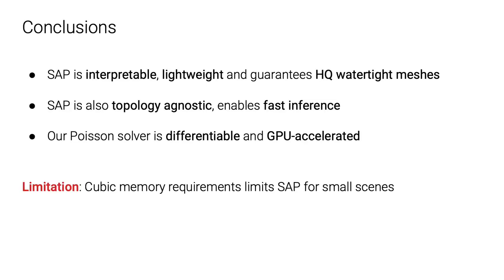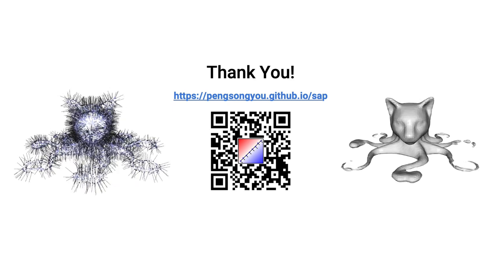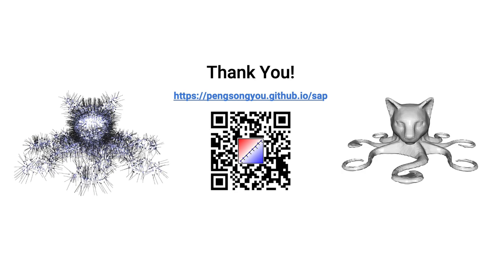To conclude, we propose Shape as Points, a new shape representation that is interpretable, lightweight, and guarantees high-quality watertight meshes. The core of SAP is a GPU-accelerated differentiable Poisson solver that we believe can be broadly applied to various problems. Currently, our method is still limited to small scenes due to the cubic memory requirement of the grid resolution; we think processing scenes in a sliding window manner and adaptive data structures, for example an OctTree, will solve this problem. More information, including code and data, can be found on our project page.